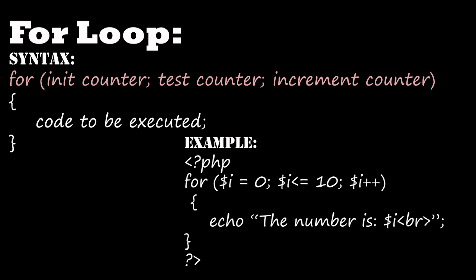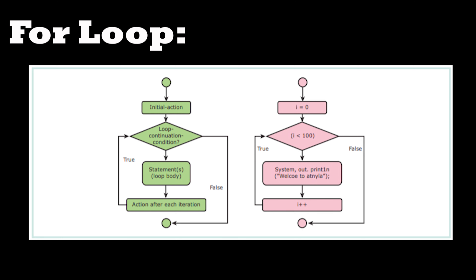For this for loop, a flowchart structure is also given. Starting with the initial action i = 0, the condition is checked in the diamond box — i < 100. Whether the loop continues or ends is decided by this condition box. If the condition is true, the statement inside the loop executes. Then it increments and checks the condition again. If false, the process ends. This is the flowchart for the for loop.